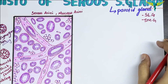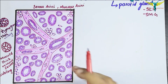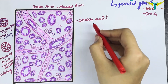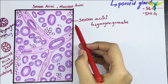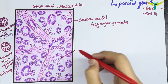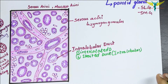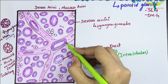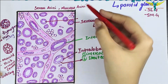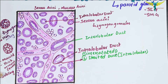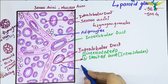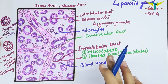In the histology of the parotid gland, only serous type of acini are present throughout. These acini are darkly stained due to the presence of zymogen granules as they are basophilic. Intercalated and striated ducts are seen — the striated duct is also called the intralobular duct. The interlobular duct is present in the connective tissue septa. Adipocytes and blood vessels are also visible in the diagram.